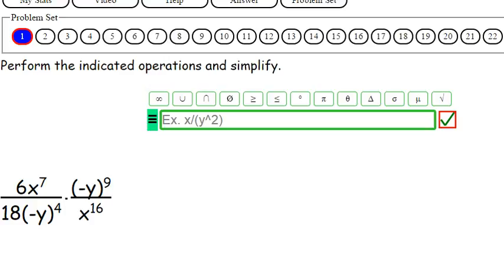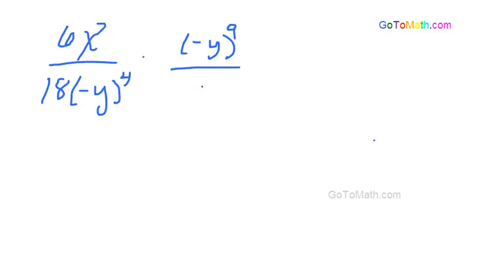Alright, we got it. So 6x to the 7th over 18 negative y to the 4th, and that's times negative y to the 9th over x to the 16th.